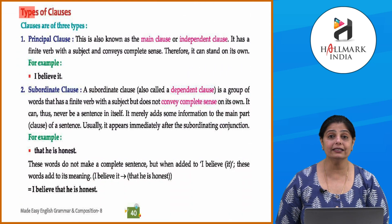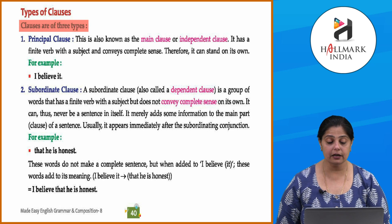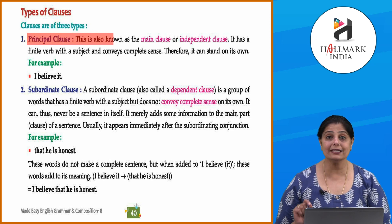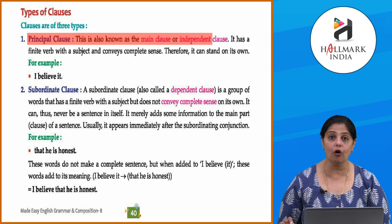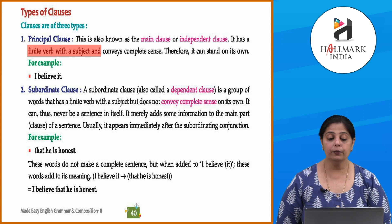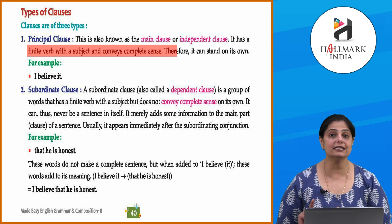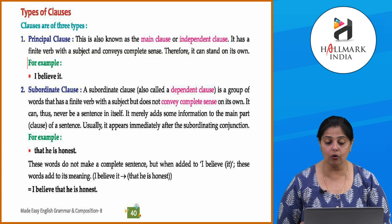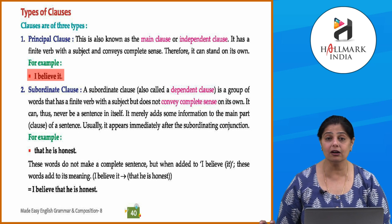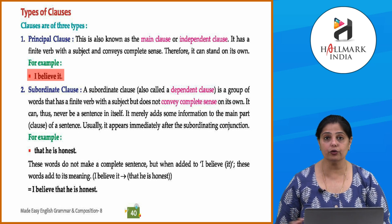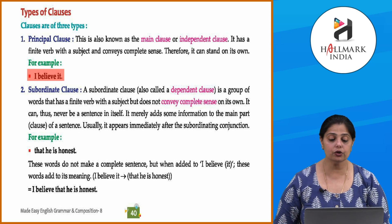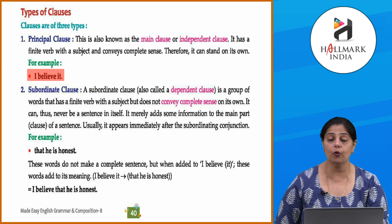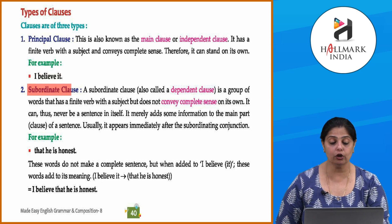There are three types of clauses. First is the principal clause, also known as the main clause or independent clause. It has a finite verb with a subject and conveys complete sense, so it can stand on its own. For example, 'I believe it' — here 'believe' is the verb and 'I' is the subject. This conveys complete sense on its own.